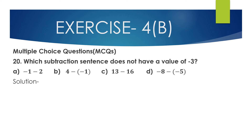Question 20, MCQ: Which subtraction sentence does not have a value of minus 3? Option A: minus 1 minus 2. Adding two integers with the same negative sign: 1 plus 2 equals 3, place the negative sign — minus 3. So option A has a value of minus 3.